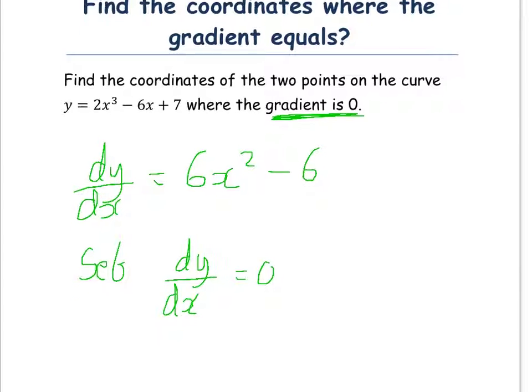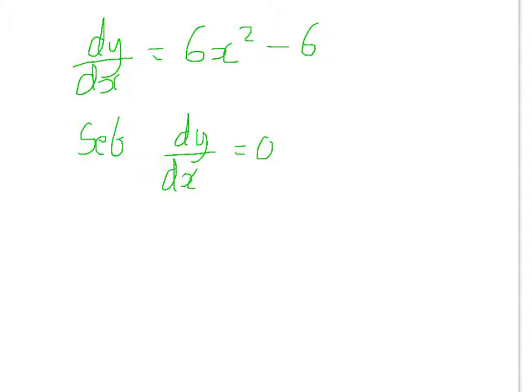So, let's do that. So, this thing we've just differentiated, so 0 is equal to 6x squared minus 6.